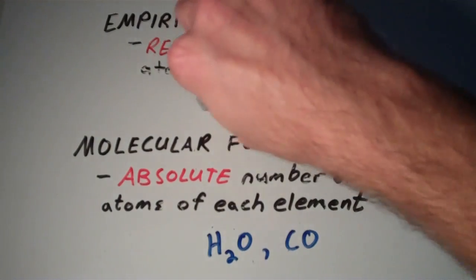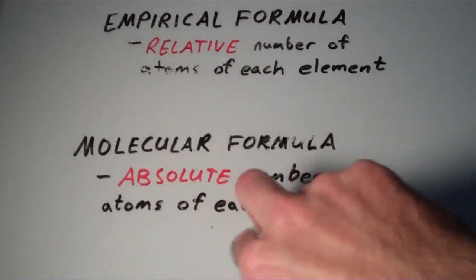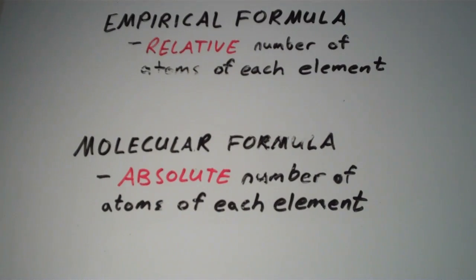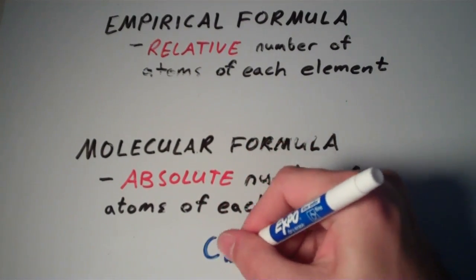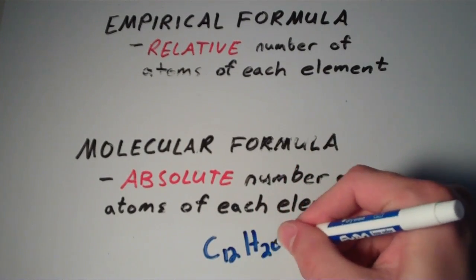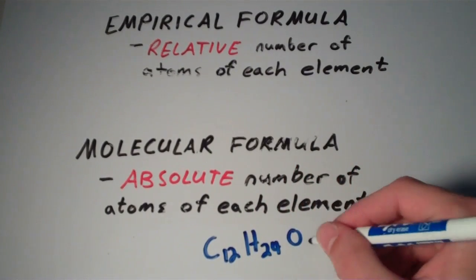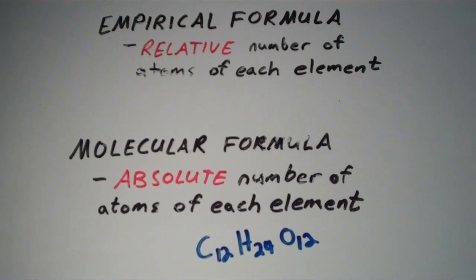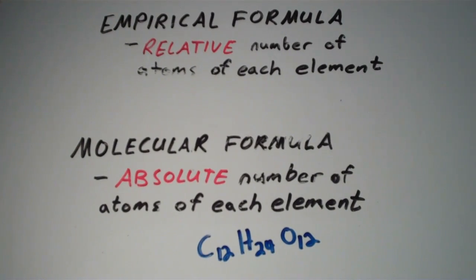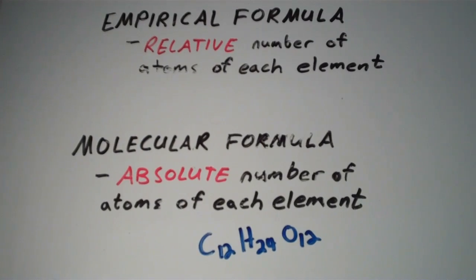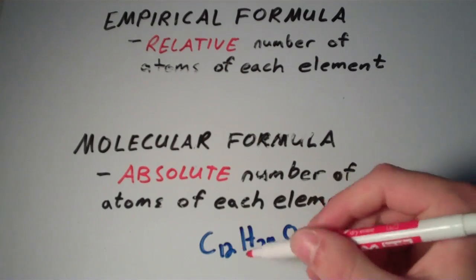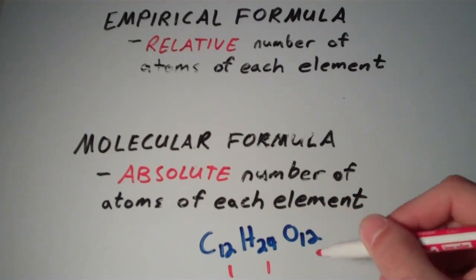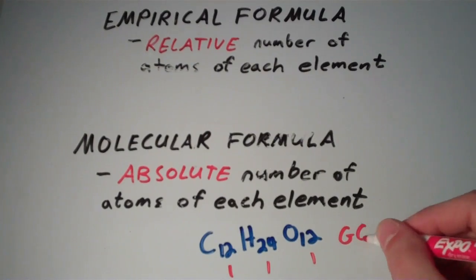Let's go through one more example. Suppose we have C12H24O12. To find the empirical formula, all we need to do is find the greatest common factor of all of these subscripts — so within 12, 24, and 12, we need to find the greatest common factor.